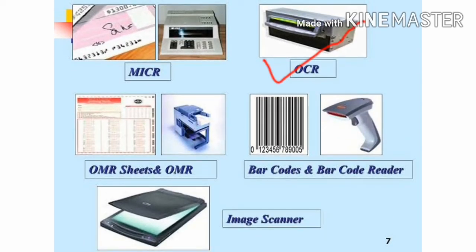OCR - Optical Character Reader. It is used to read characters from a printed paper into the computer. OMR. OMR is a device for capturing data formed by dark and light marks on specific positions of the paper.